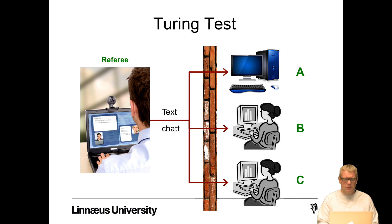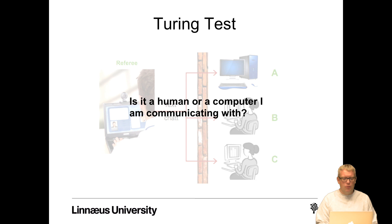The Turing test works like this: a referee or judge communicates with persons and computers by text — basically a chatbot. The judges don't know whether they are talking to a person or a computer, and the task is for the judge to reason about whether it's a human or computer they're communicating with. To pass the Turing test, the judges should classify all computers as humans.